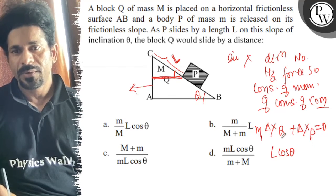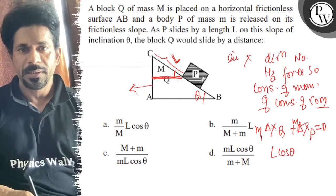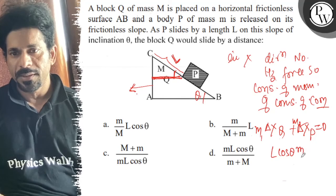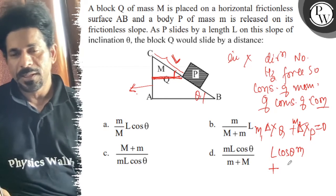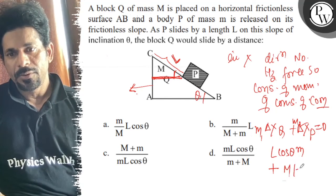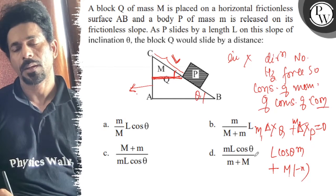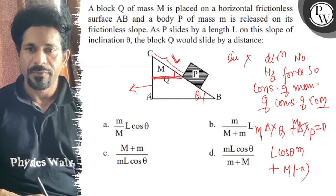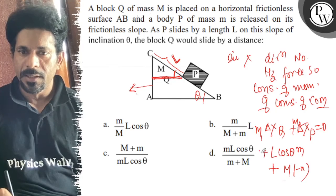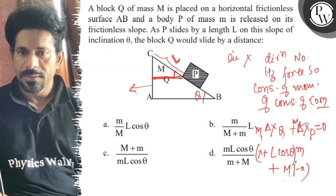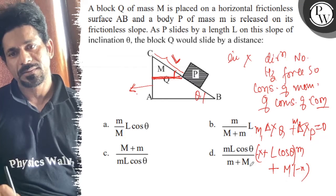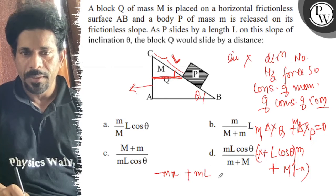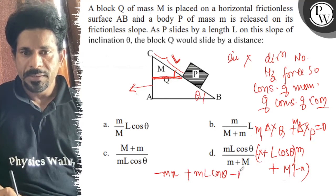मास साथ मिलेंगे m1 m2. इसका मास कितना है, P का मास कितना है? अब block Q यह है तो capital M है और यह P का मास small m है. अब यह मान लो x पीछे जा रहा है तो capital M into minus x. इसमें एक चीज़ और सोचने वाली है कि यह जो था यह वह with respect to wedge था और wedge इधर जा रहा है तो मुझे इसमें x P जोड़ना पड़ेगा minus के साथ. तो यह हो जाएगा minus M x plus small m L cos theta minus capital M X is equal to 0.